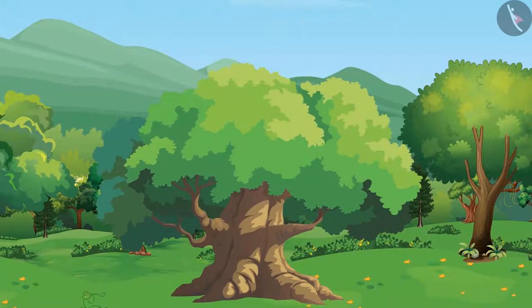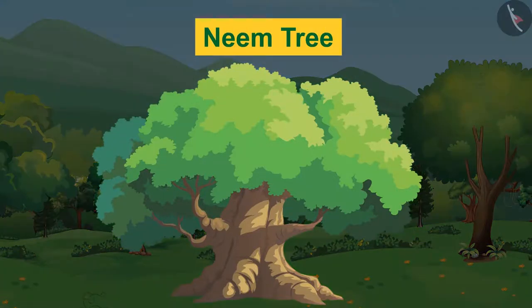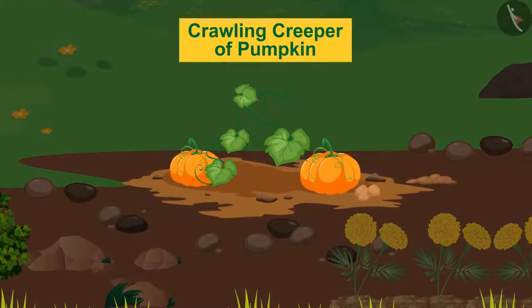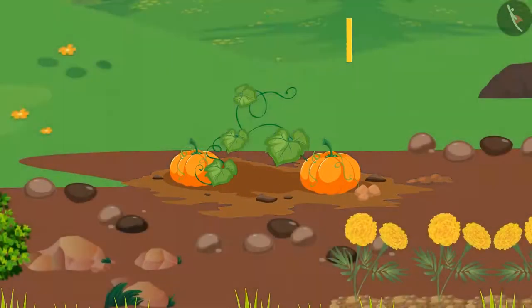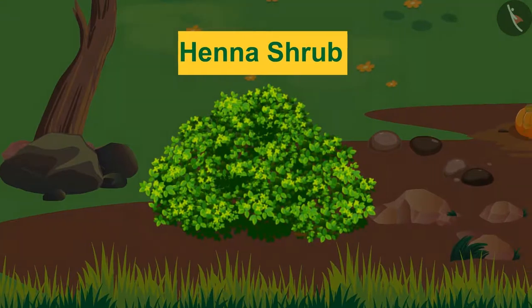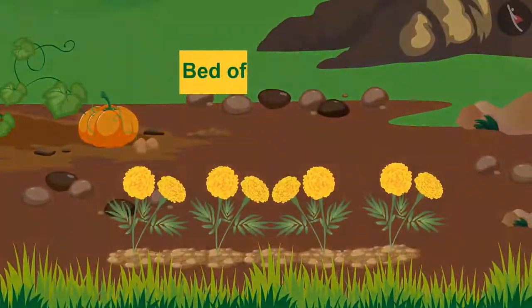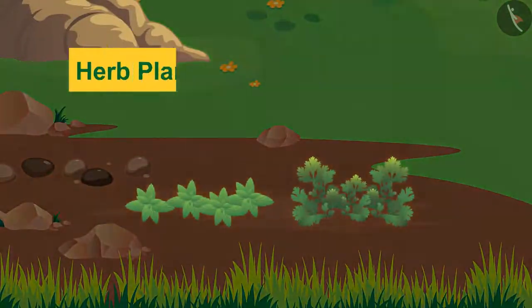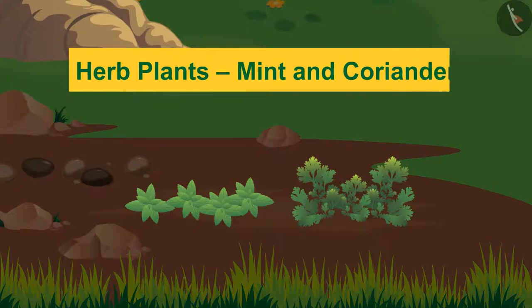First of all, let's observe the various types of plants which exist. Here is a big, tall tree. Here is a crawling creeper of pumpkin. Here is a hinnah shrub. Here is a bed of marigolds. And here are the small herb plants of mint and coriander.